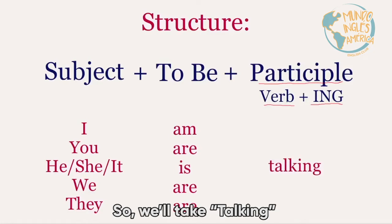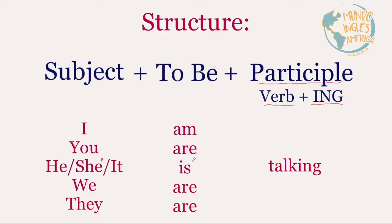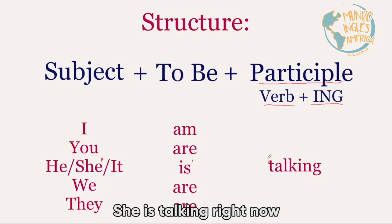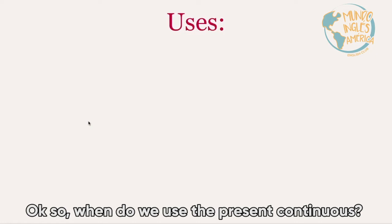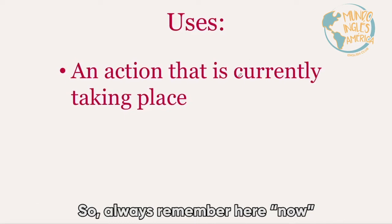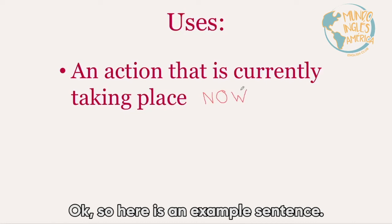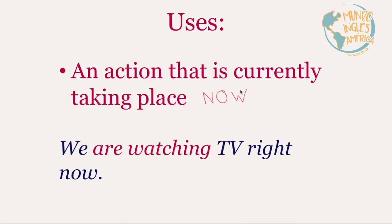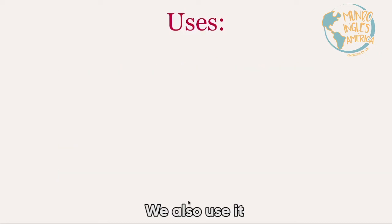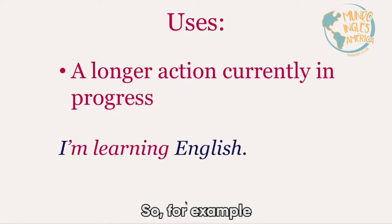Let's take any participle — we'll take 'talking'. So give me a sentence: 'She is talking right now.' When do we use the present continuous? We use it for an action that is currently taking place. Always remember: now — that's the important thing. For example: 'We're watching TV right now.'